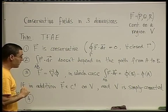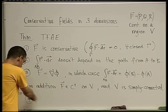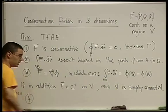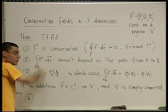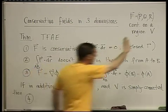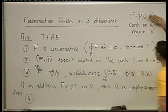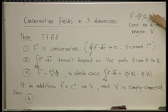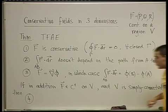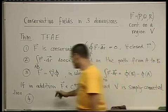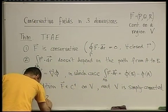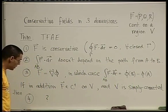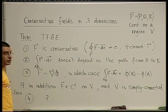So if the domain is simply connected, there's going to be an additional condition. When this was two-dimensional — when F was just p and q — the condition was qx equals py. Now, obviously, it's going to be some condition involving all three components. So what is this mystery Condition 4?